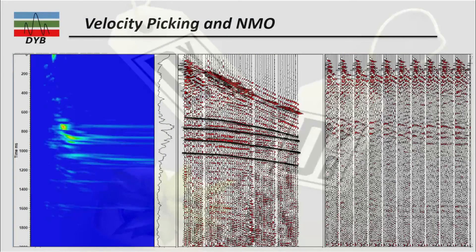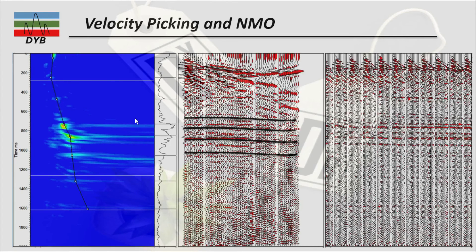Here is an example of NMO correction applied to real data. This is the input data — the red lines drawn on top show events dipping with hyperbolic move out. This is the semblance plot and the CVS panel on the right. When we pick the velocity here, the events are flattened out. You can play with the velocity picks to make your reflectors flat. This is before NMO correction and this is after.